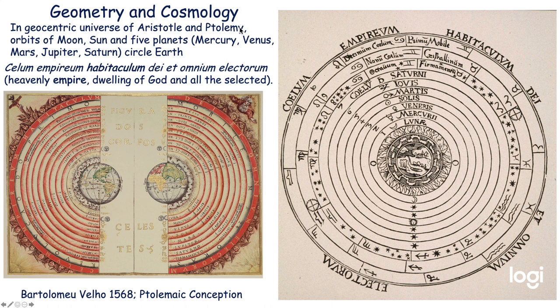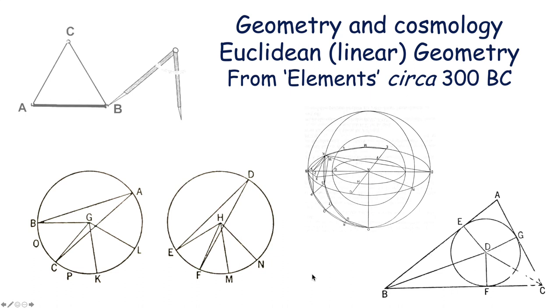Going to cosmology — the geocentric universe of Aristotle and Ptolemy, with the orbits of the Moon, Sun, and five planets circling the Earth. This conception was still common during the Renaissance period. You can see the Earth at the center of the universe, with Moon, Mercury, Venus, the Sun, Saturn, and then the immutable heavens beyond the universe. This was given a big shock by applying the simple linear geometry of Euclid, developed around 300 BC.